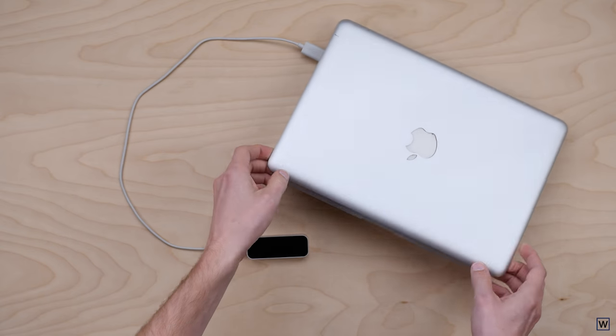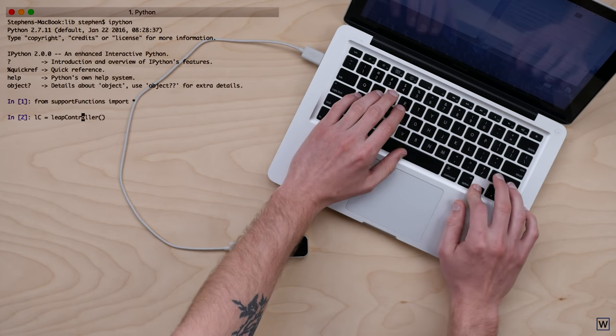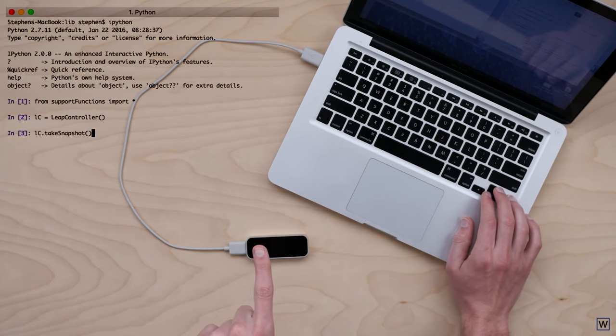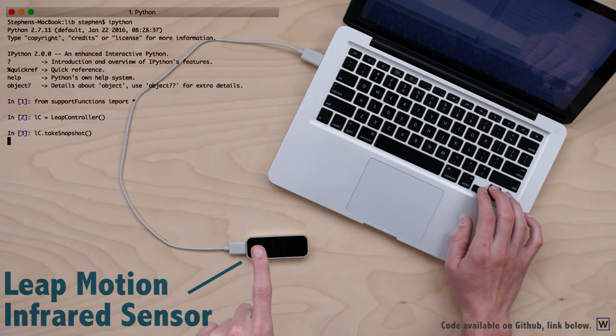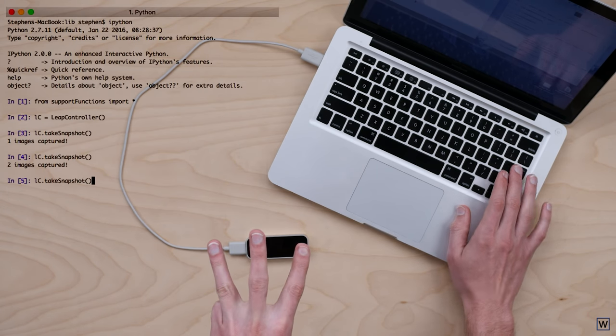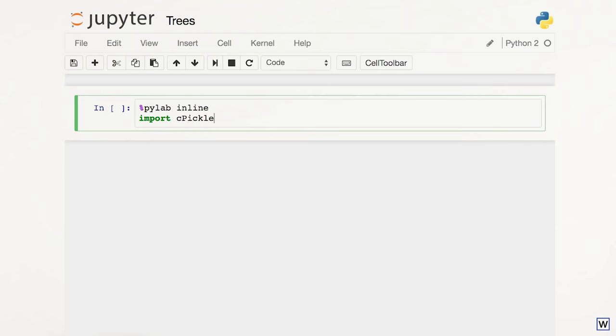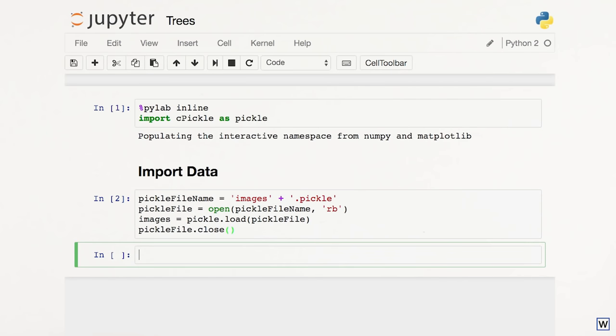We'll start with a photoshoot. If we're going to program our computer to count fingers, we need some data to practice on. Using a Leap Motion infrared sensor and some Python code will take some pictures of hands. We can have a look at our data using a tool our early AI counterparts could only have dreamed of, the Jupiter notebook. We'll import our images and have a look at the first one.